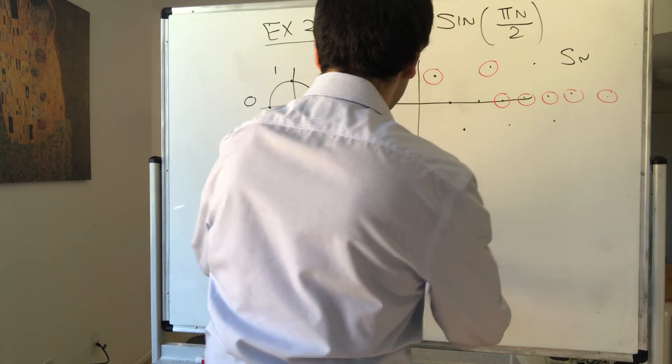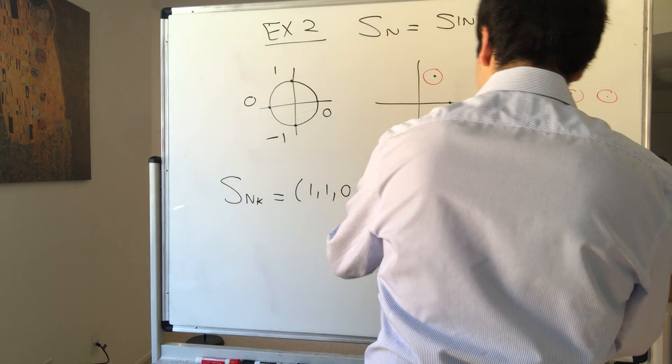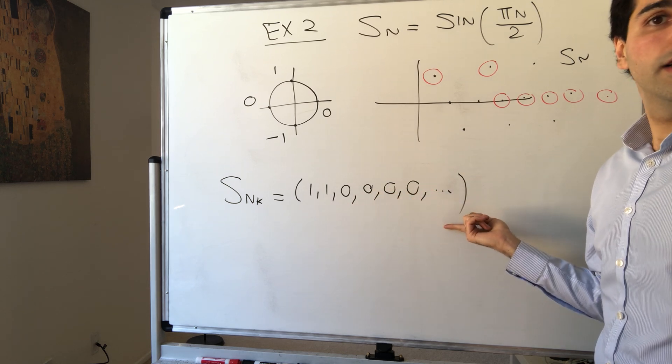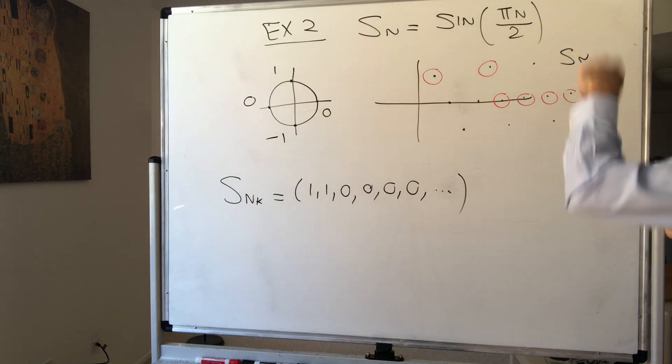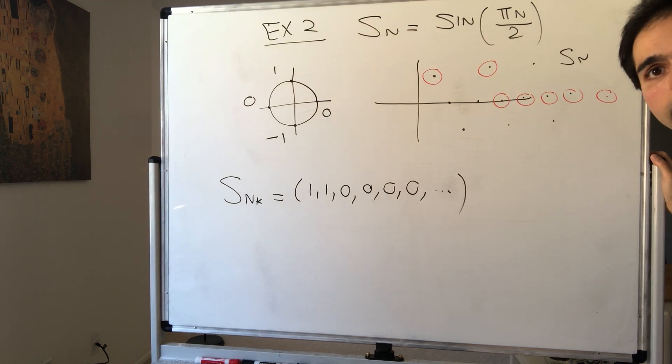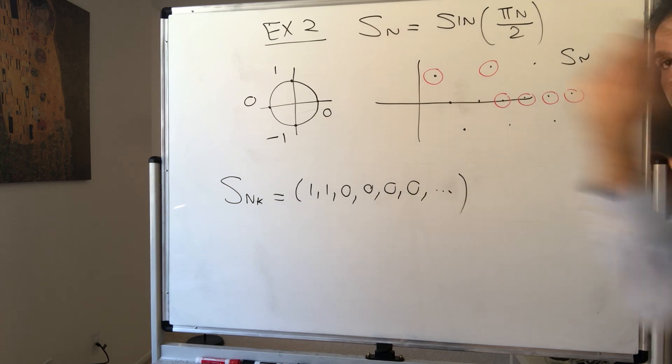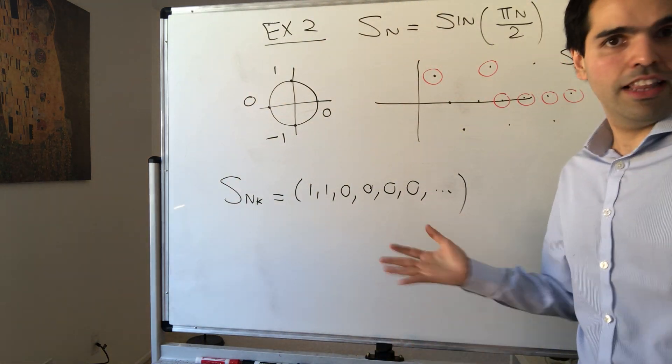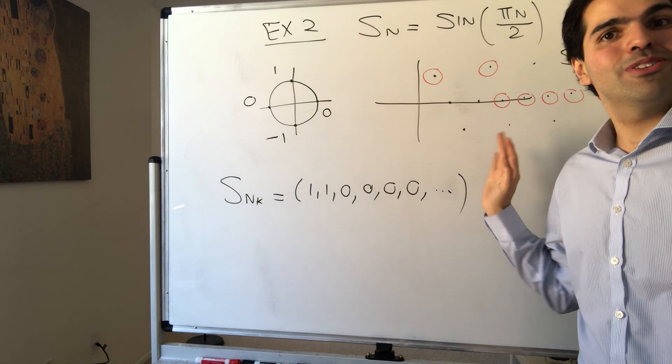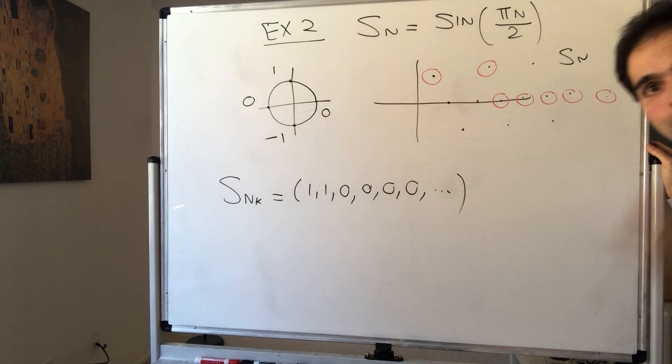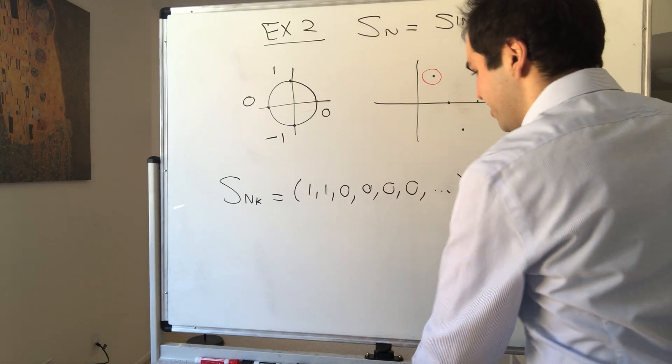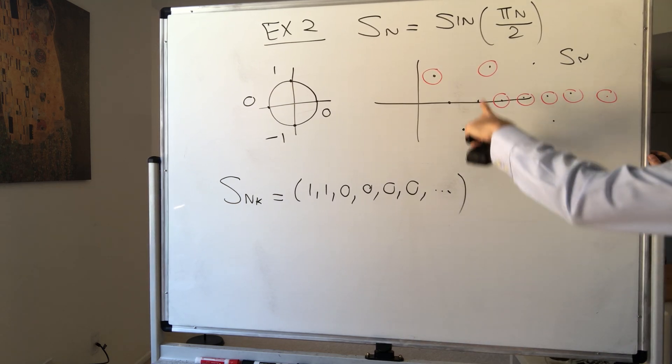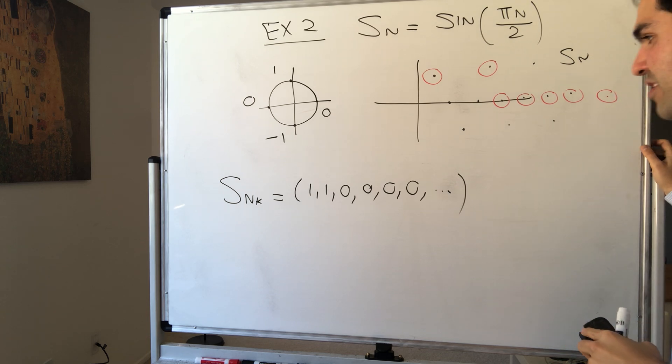And why is that one interesting? Because, notice this one is convergent. It converges to 0. So even though this sequence Sn doesn't converge, it can't make up its mind, there is a convergent subsequence. And in fact, we'll see under some very mild assumptions later, every sequence will have a convergent subsequence. So, strictly speaking, every bounded sequence will have a convergent subsequence. So this is not an atypical scenario. That said, even though this sequence doesn't converge, but has a convergent subsequence, let's prove something related.